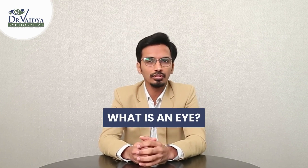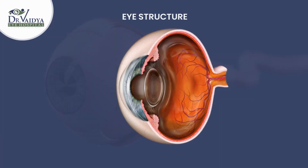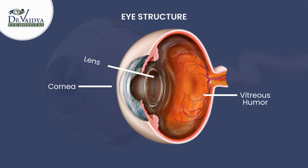To understand about floaters, we basically need to understand the eye first. Our eye structure is such that the first portion we see — the black portion of the eye — is called the cornea. Just behind the cornea is what we call the lens. And the vitreous humor covers the entire back portion of the eye.